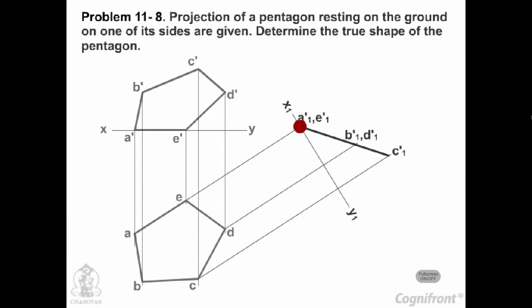It will give a point view a dash 1 and e dash 1 of AE and an edge view a dash 1 c dash 1 of the pentagon.